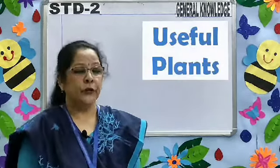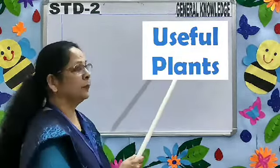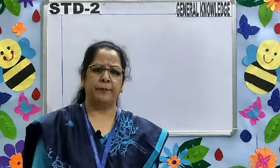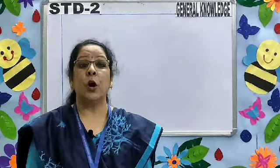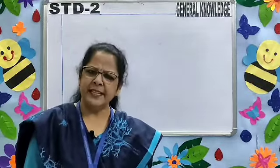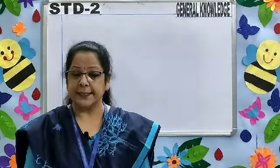Our second topic is Useful Plants. Children, we know that plants are very useful to us. We get many things from them. But the most important thing is oxygen, which helps us to breathe and live. We see many trees and plants around us.